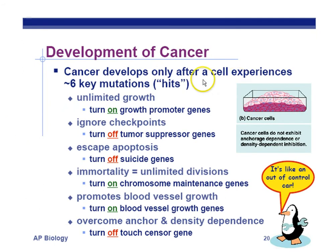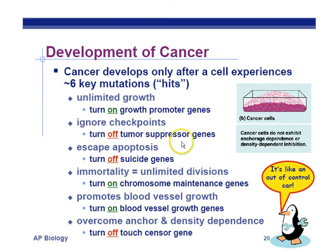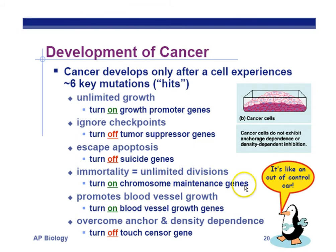For cancer to develop, you have to turn on growth promoter genes for unlimited growth. You have to ignore all checkpoints — G1, G2, and M — so there's no suppression of the cell cycle. You have to escape apoptosis by turning off the suicide genes that would kill cancerous cells. Cancerous cells are immortal and can divide unlimited times, so chromosome maintenance genes must be turned on, relengthening telomeres. This might be a secret to making cells immortal, but it comes with cancerous results, so we should be careful.